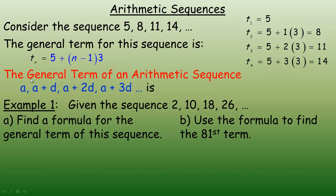In general, for arithmetic sequences, the symbol often used to represent the first term is a, and d is the common difference. So in the case above, d was 3. The first term is a, the second term is a plus d, the third term is a plus 2d, and the fourth term is a plus 3d. So the general term for any arithmetic sequence is: the nth term equals a plus (n minus 1) times d. The number of common differences you're adding is always 1 less than the term number.